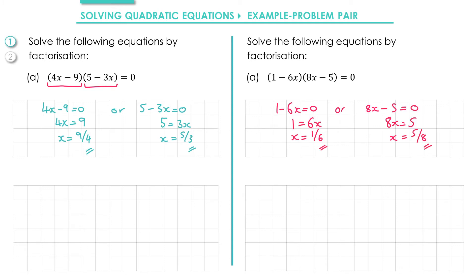In a few seconds I'm going to move on to part B, but first of all I'm just going to go through how I obtained it. So once again we have two brackets multiplied together which equals 0. If the first bracket equals 0 we get 1 - 6x = 0. Adding 6x to both sides gives us 1 = 6x and dividing through by 6 gives us x = 1/6.